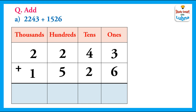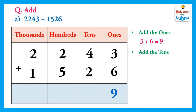After this, we will add them. First, we will add the ones. 3 plus 6 equals 9. We write 9 in the ones column. Now we will add the tens. 4 plus 2 equals 6. We will write 6 in the tens column.